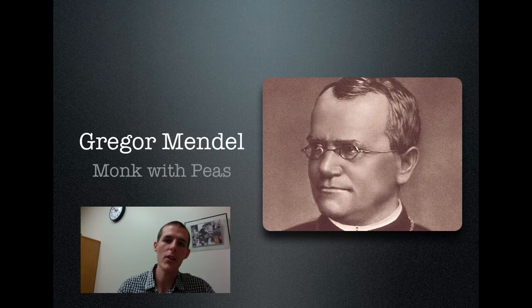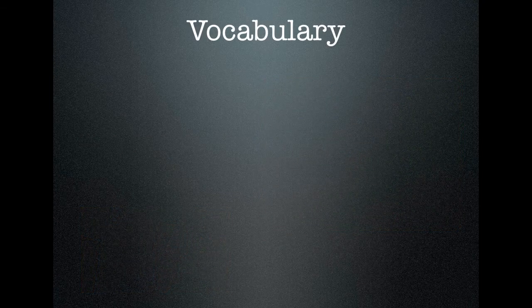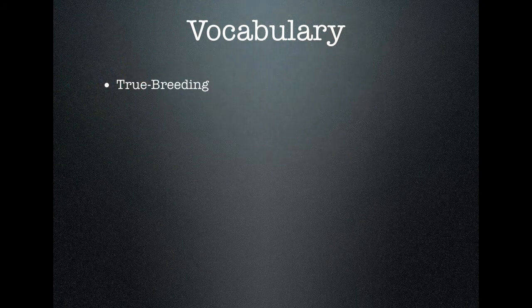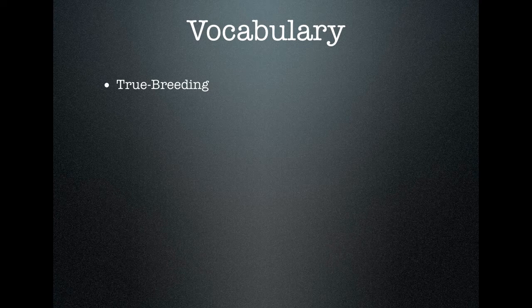Now for vocabulary — this is the foundation of a lot of the conversation we're going to have. The first term is true breeding. Any organism that is true breeding reproduces the same trait when bred. So if a plant has purple flowers and every time it is bred it gives offspring with purple flowers, that plant is known as a true breeding plant. It always gives purple offspring.